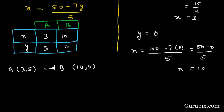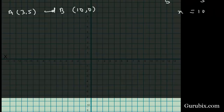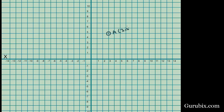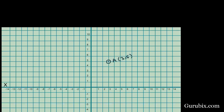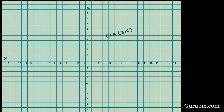Now we shall plot these points on the graph paper. Point A is at (3, 5) — here is 3 and here is 5. Point B is at (10, 0) — here is 10 and the value of y is 0 on the x-axis. We have now drawn a straight line through points A and B.